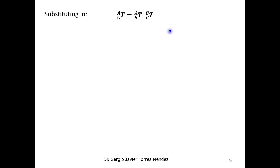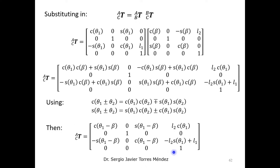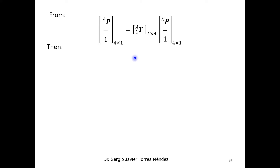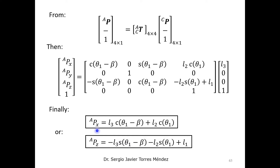Then, substituting into this matrix multiplication and performing the operations, and also using trigonometric identities to reduce the components of this matrix, we finally obtain our homogeneous transformation matrix relating the c and a coordinate systems. Using our forward kinematics model, we obtain finally our forward kinematics equation. As we said, we can select either the x coordinate or the z coordinate, and either one will define the position of the end-effector.